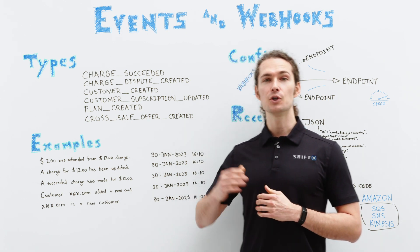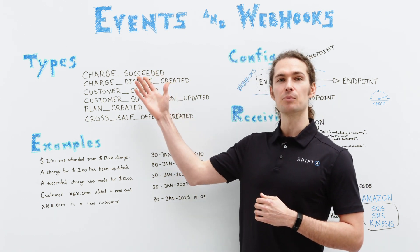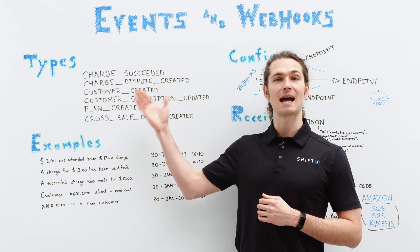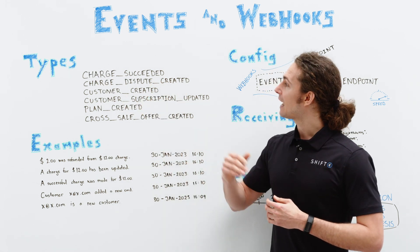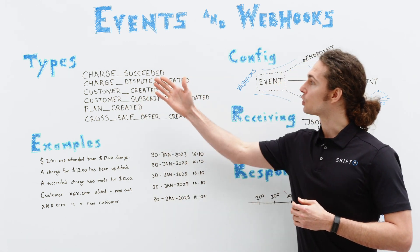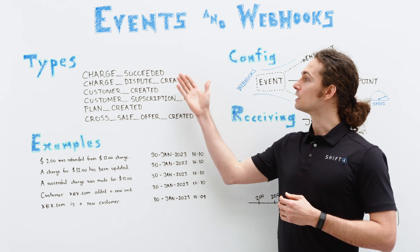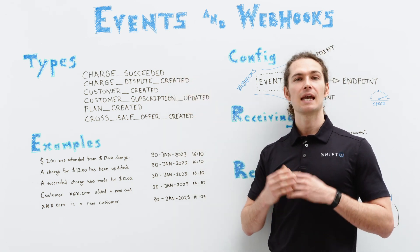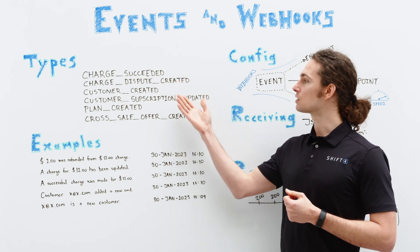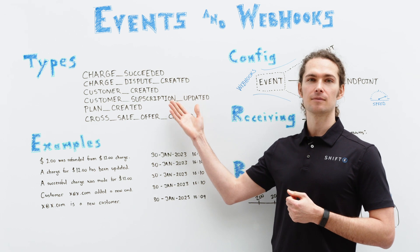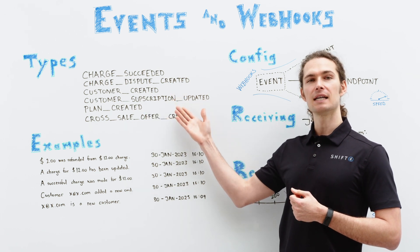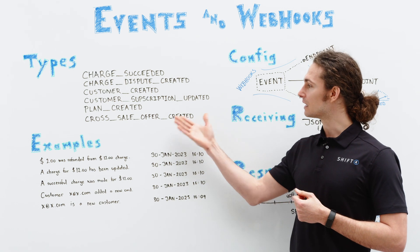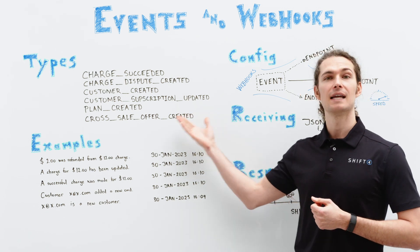Here are a few additional examples of actions on your account that will be represented as events: a successful charge, a charge dispute was created, a chargeback, a new customer created, a subscription was updated, a plan that's created — and the list goes on and on.